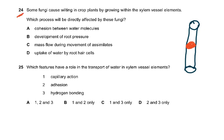Another question answered incorrectly by many students: some fungi cause wilting of crop plants by growing within the xylem vessel. Which process is directly affected? Water molecules attach to each other by cohesion and to vessel walls by adhesion. When fungi block the xylem, cohesion between water molecules is disrupted, so water can no longer rise up the xylem vessel. The answer relates to cohesion being directly affected.